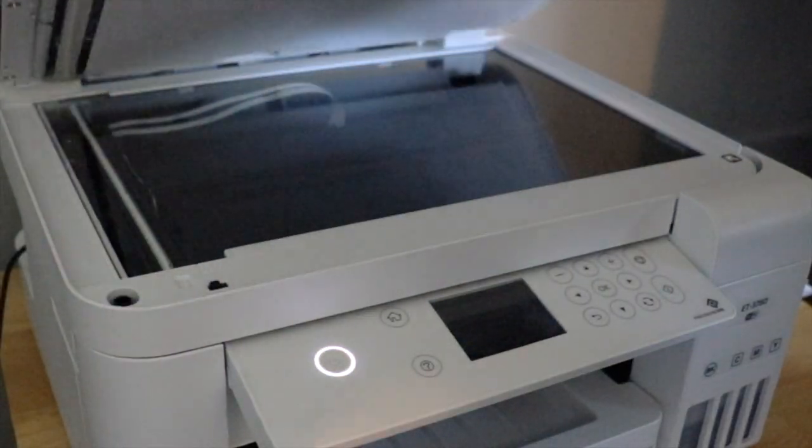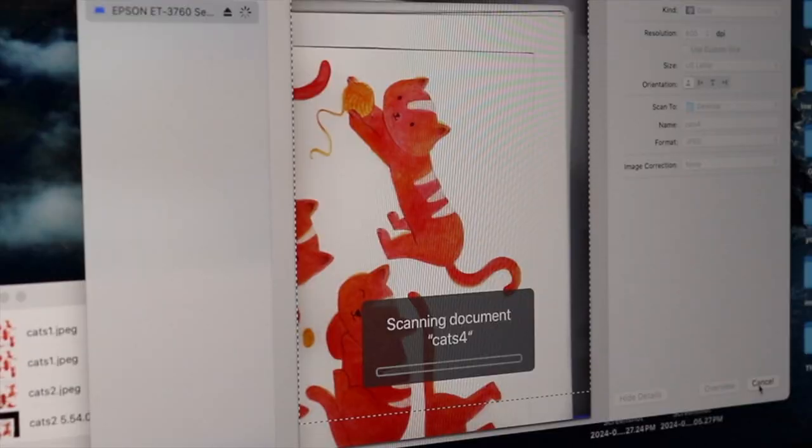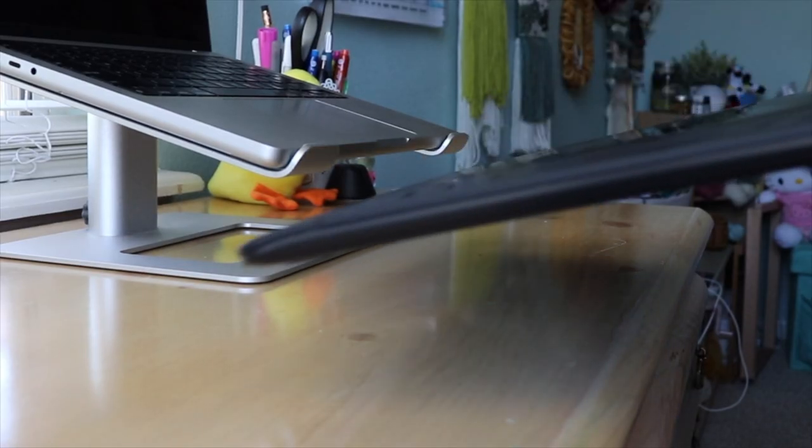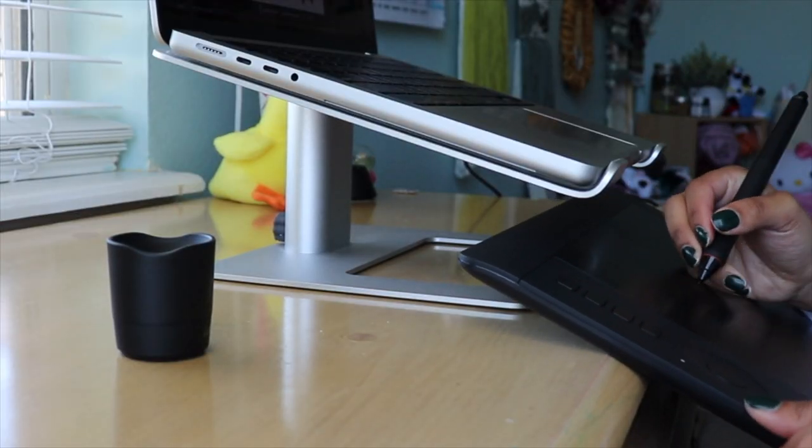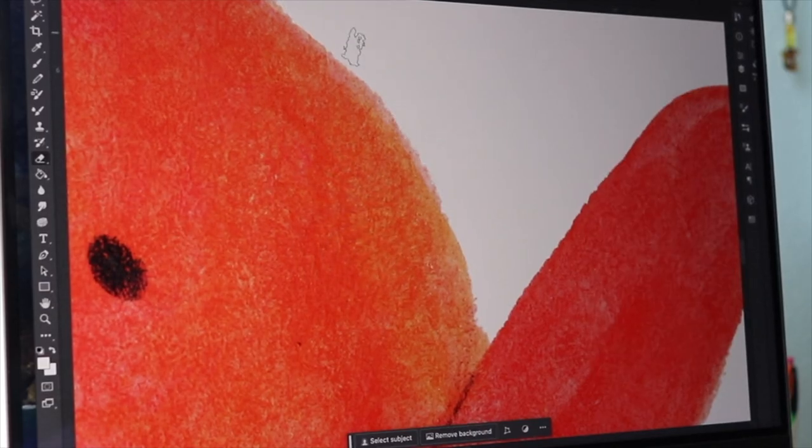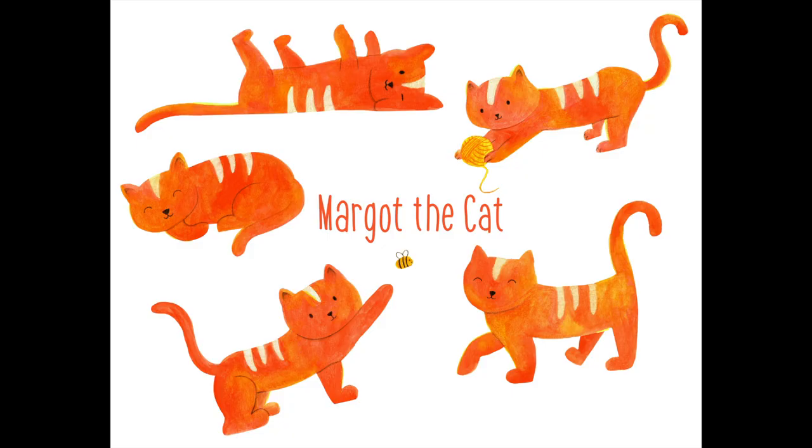Once my illustration is done, I'm going to scan it in at a nice high resolution. Once they're all scanned in, I'll be using Photoshop along with my Intuos Pro to smooth out a lot of the edges on the cats and play around with how they are arranged for the final illustration. Without further ado, here is the finished illustration of Margo the cat and all the activities that she gets up to in her day-to-day life.